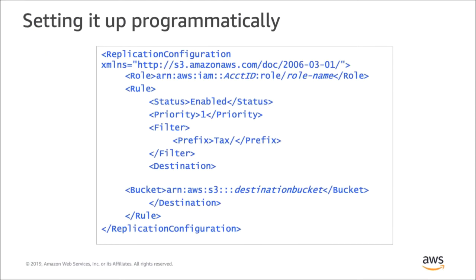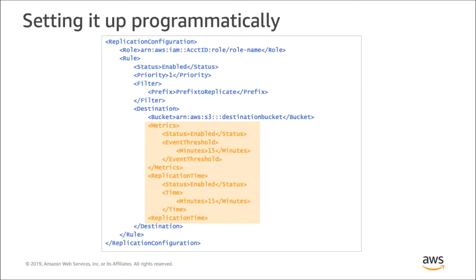This is just a basic replication configuration. It sets up a new rule and tells S3 that the objects matching the tag prefix will be replicated to the destination bucket that you specify. To enable replication time control, all you do is add another section highlighted here to your replication policy. This is what you do when setting this up programmatically. There are many more policy examples in the S3 replication documentation, including how to set up cross-account or cross-storage class replication. You can also perform this setup in the S3 console, which we're about to see a demo of.